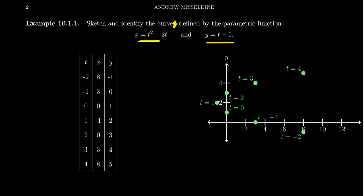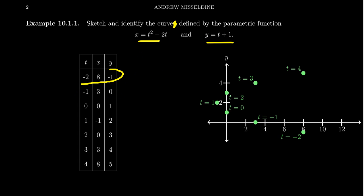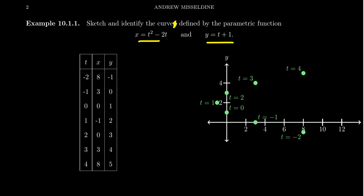We can also use negative values. When t equals negative 1: x equals 1 plus 2, which is 3; y equals negative 1 plus 1, which is 0 — giving the point (3, 0). When t equals negative 2: x equals 4 plus 4, which is 8; y equals negative 1 — giving the point (8, −1). We've now collected a good number of points.